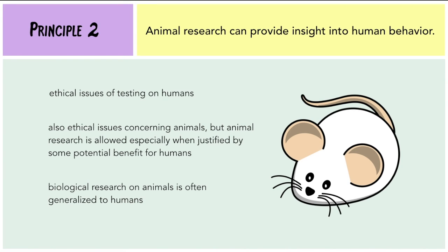The next principle is that animal research can provide insight into human behavior. Because ethical boundaries do not really allow people's brains or body chemistry to be experimented on too much, animal research is used. Though there are ethical considerations in animal research, animal studies are usually approved by the Ethics Board given that they are of benefit to humans. In the biological level of analysis, studies on animals are often generalized to humans as well.